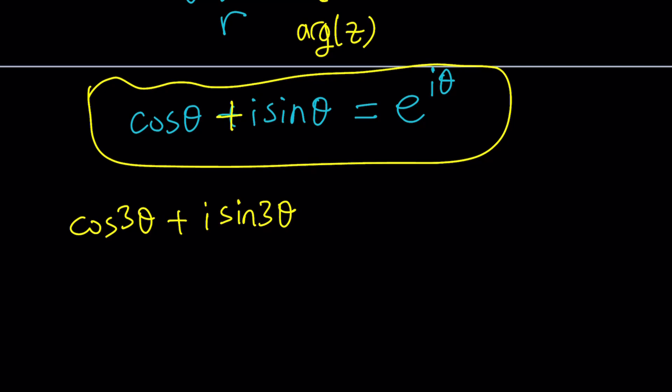Because we have this Euler's formula we can replace theta with 3 theta easily right in the exponent. So that's going to give us e to the power I times 3 theta. You just replace theta with something else you get another identity. Now here's the critical part.